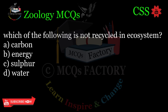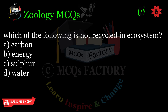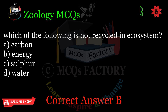Which of the following is not recycled in an ecosystem? A. Carbon. B. Energy. C. Sulfur. D. Water. Correct answer: B.